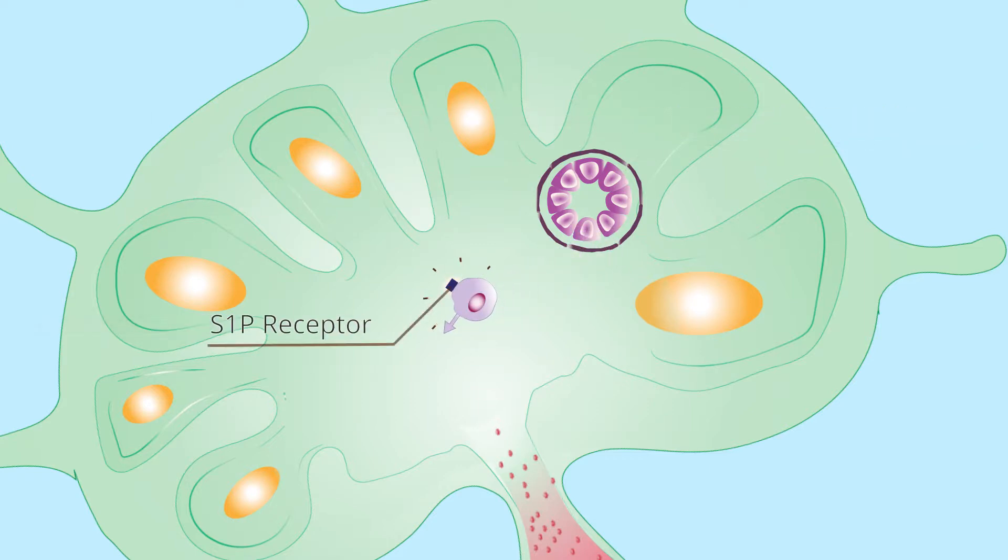Naive T cells express a receptor on their cell surface that recognizes and binds S1P.